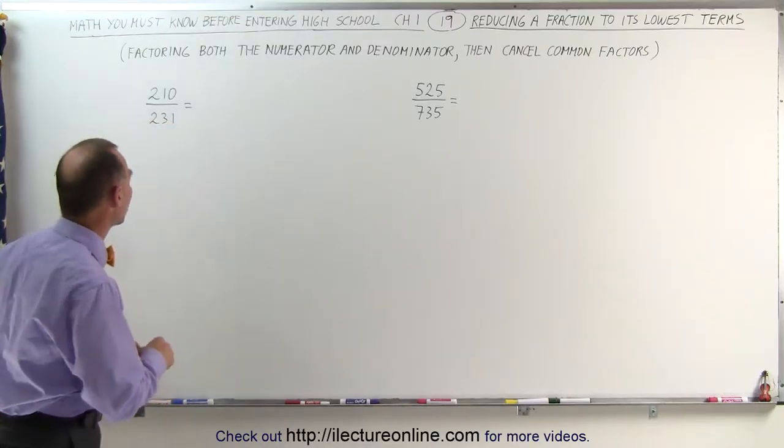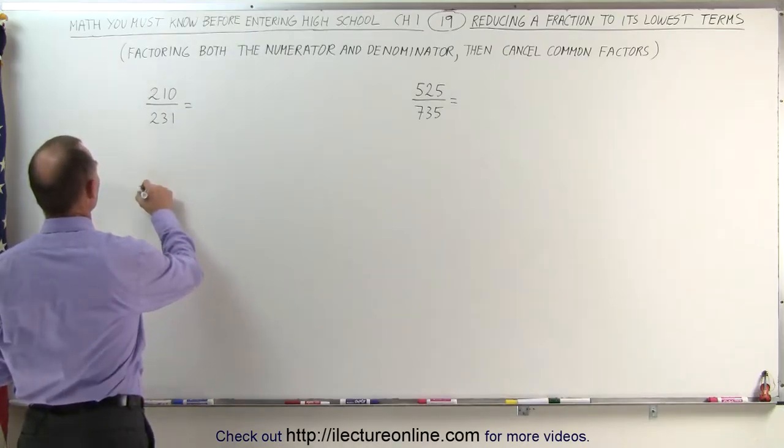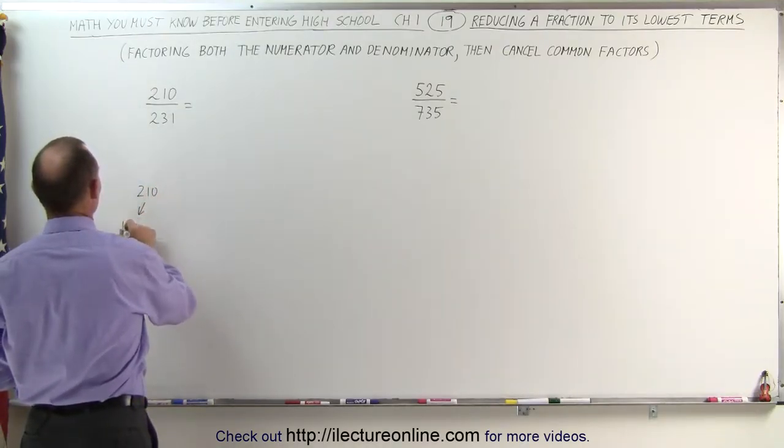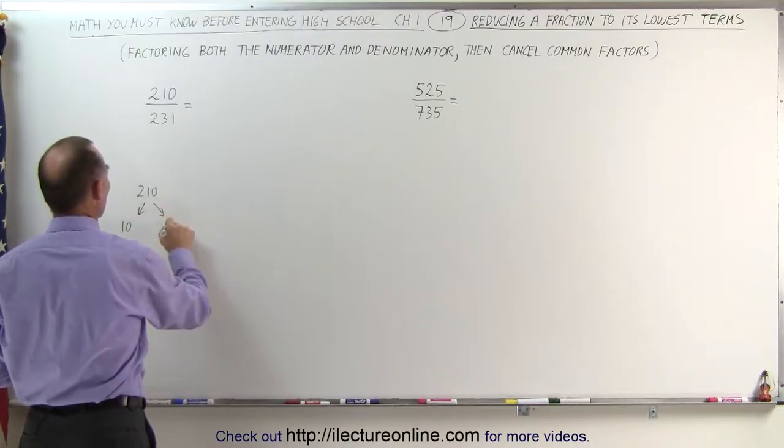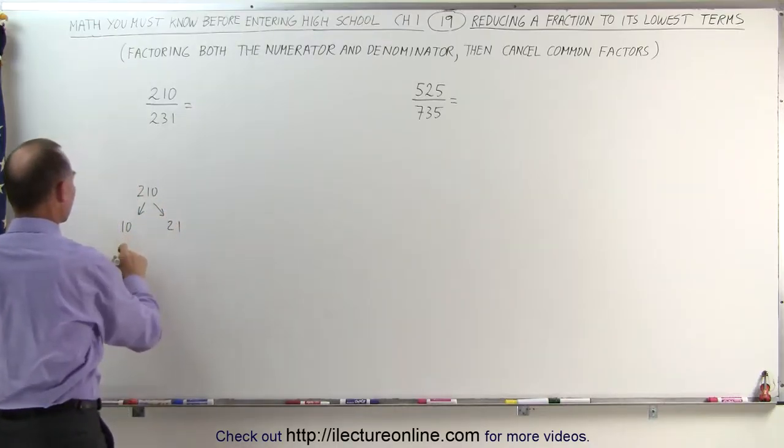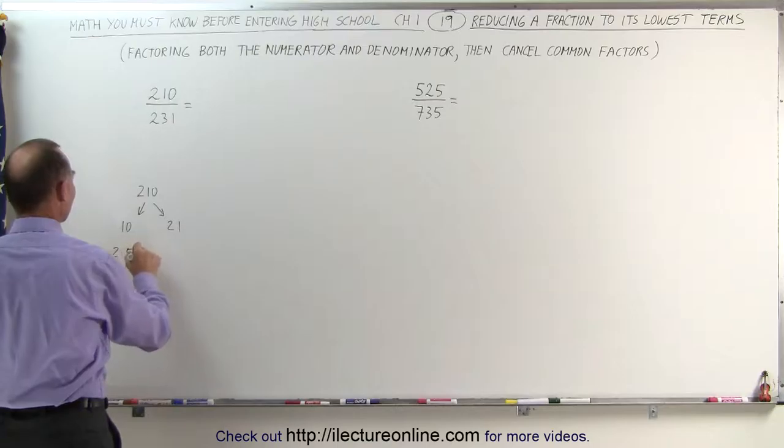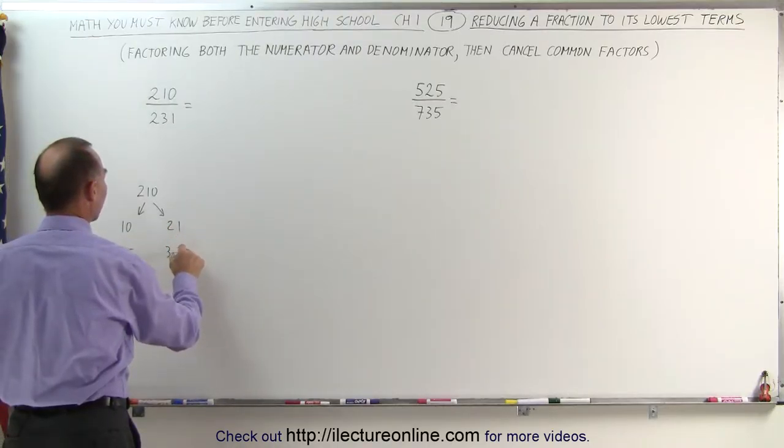So let's start with the number 210. Well, 210 can be written as the product of 10 times 21, and the factors of 10 are 2 and 5, and the factors of 21 are 3 and 7.